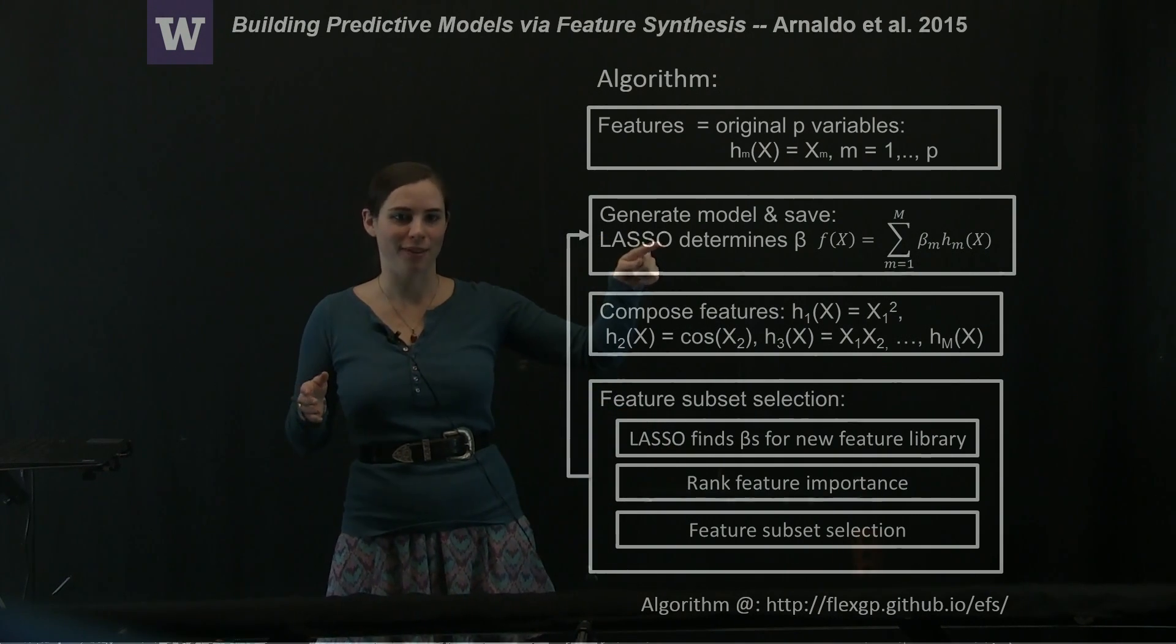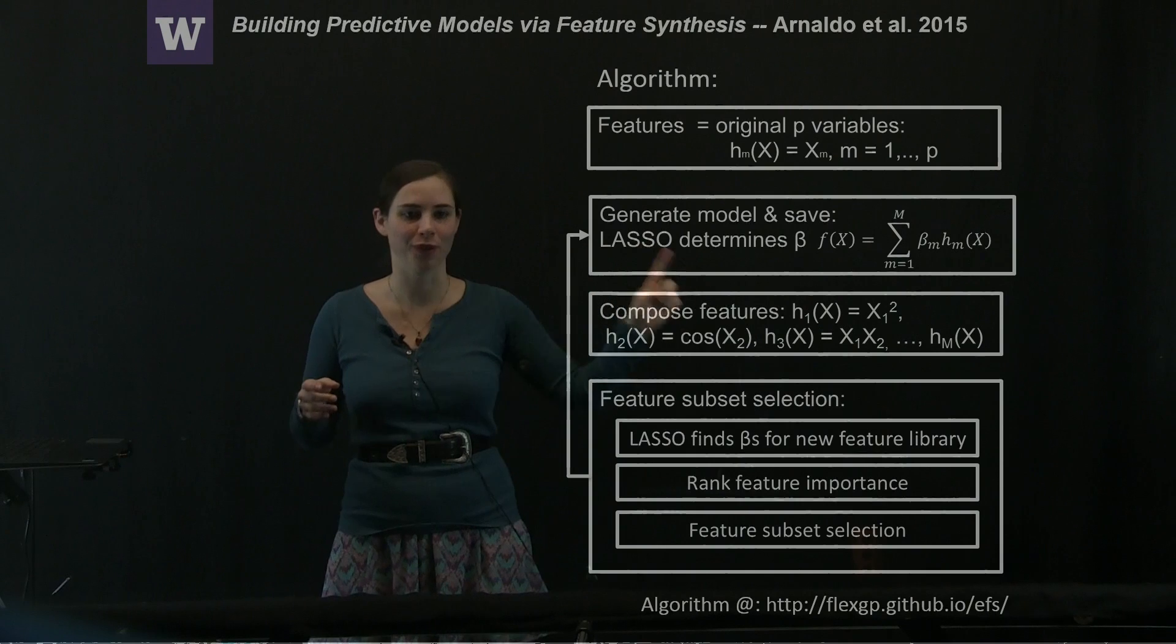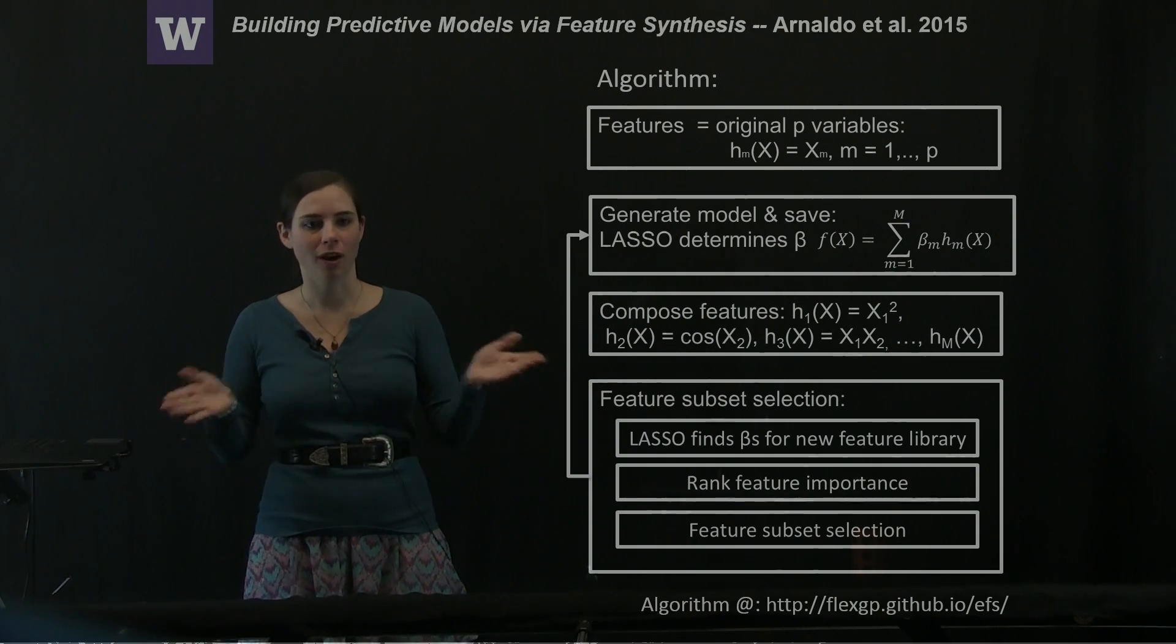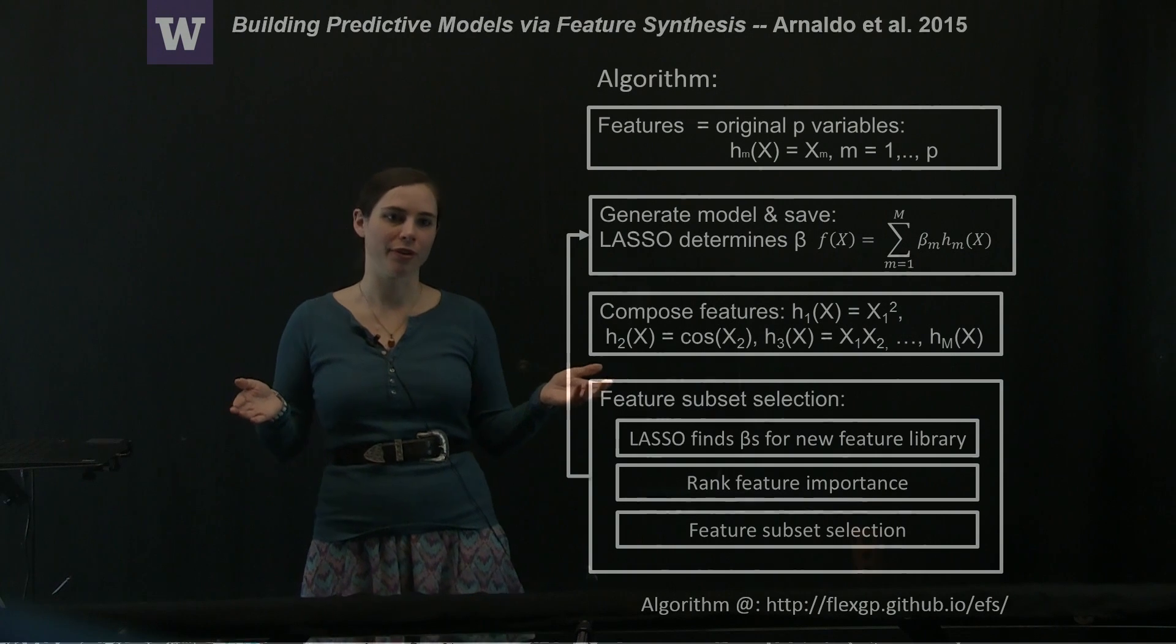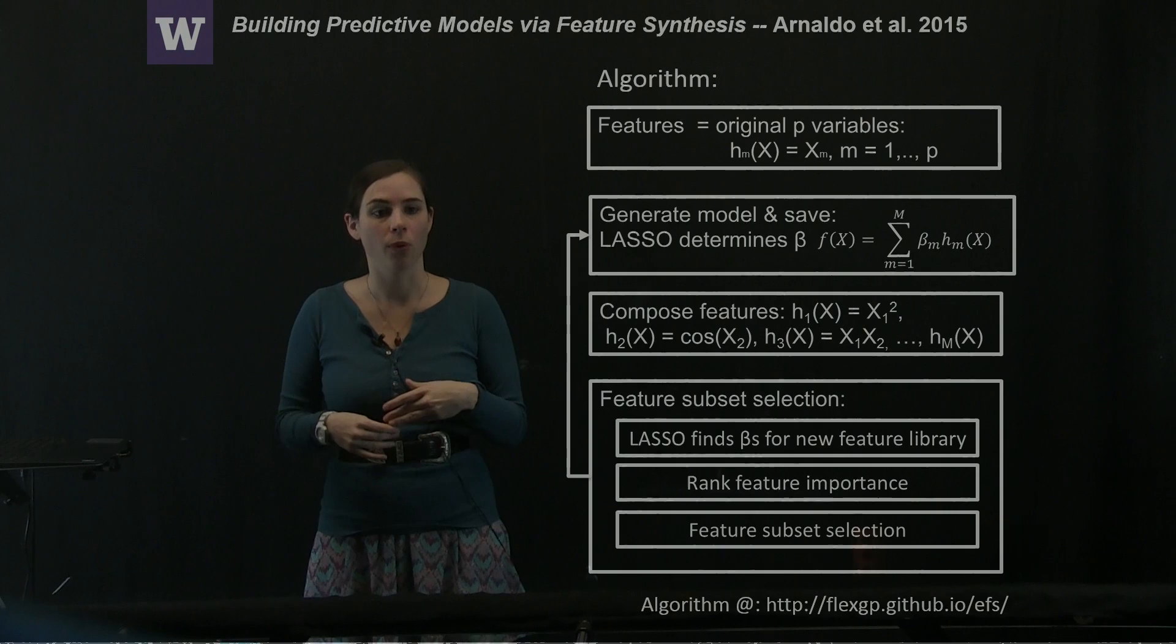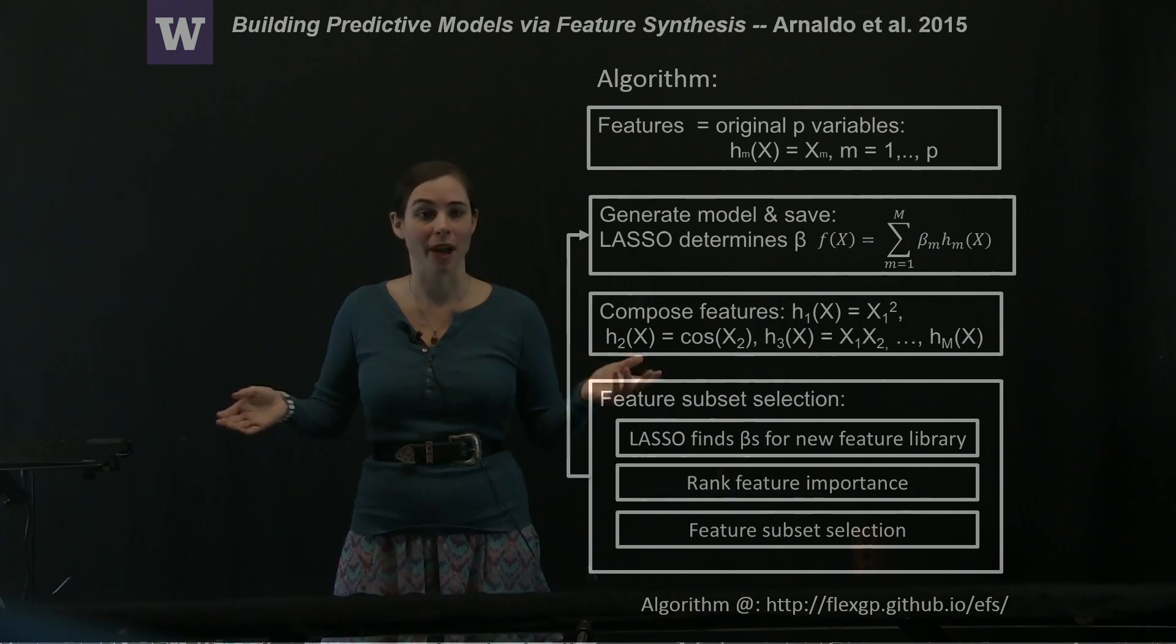Now, plug them back in at the beginning and repeat over and over again until you have a model that either the mean squared error is no longer decreasing as you iterate through the algorithm or you have some time threshold.